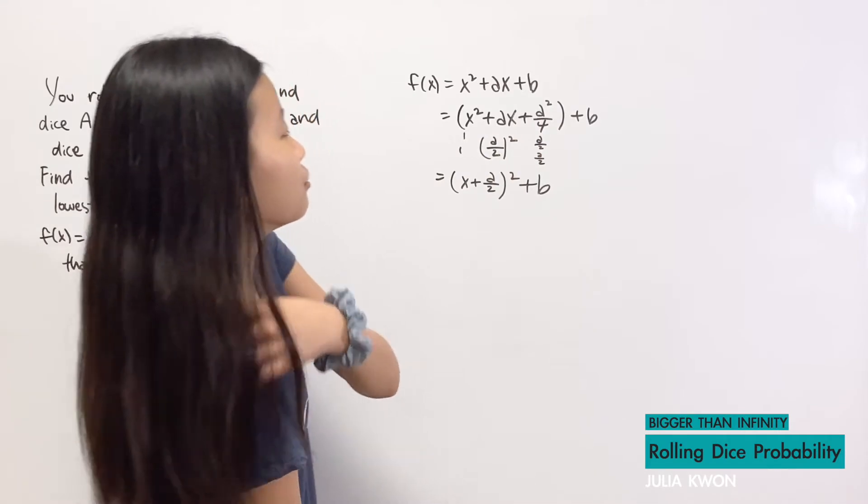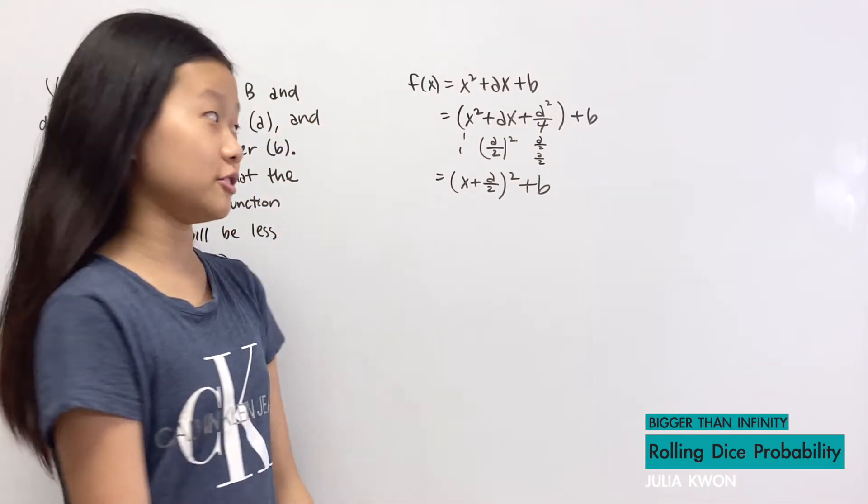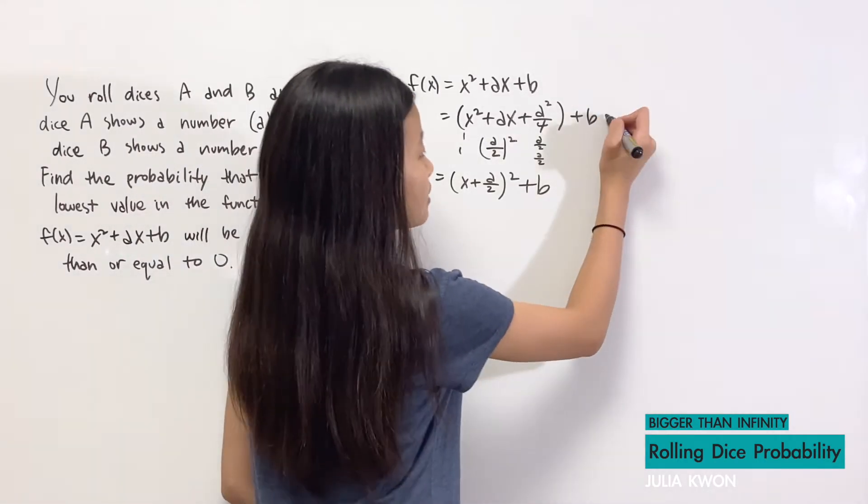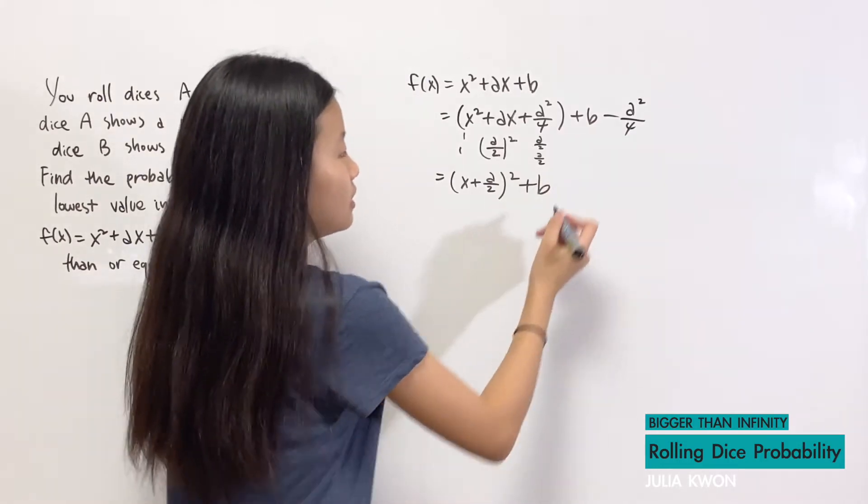Here when I added a²/4, I can't just add things in an equation and say that they're equal to each other. I also have to subtract by a²/4 if I'm going to add it so that it's like I did nothing.